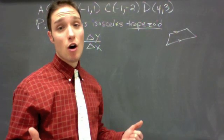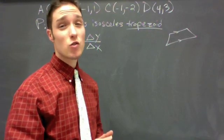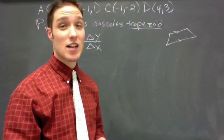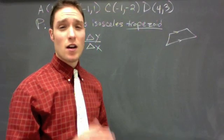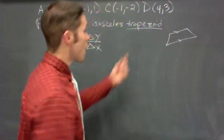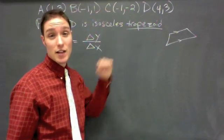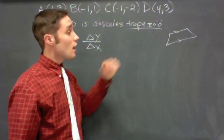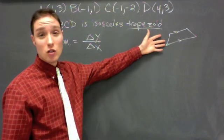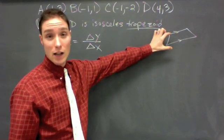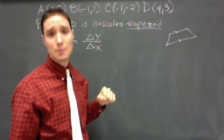So now that we're all done plotting our points on the coordinate plane, we're ready to do some calculations and prove that this is an isosceles trapezoid. Well, we should start by proving that it's a trapezoid and then we can prove that it's isosceles. A trapezoid is a quadrilateral that has one pair of parallel sides and another pair of non-parallel sides.